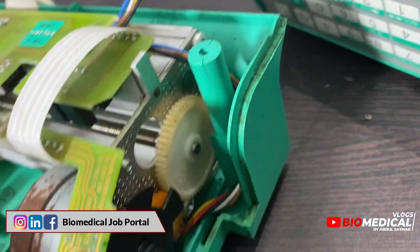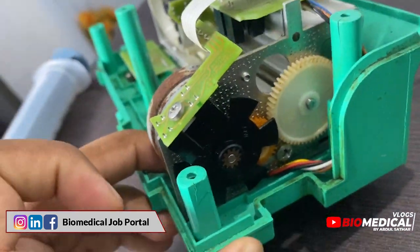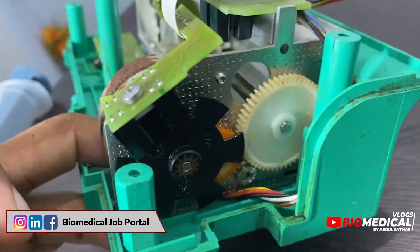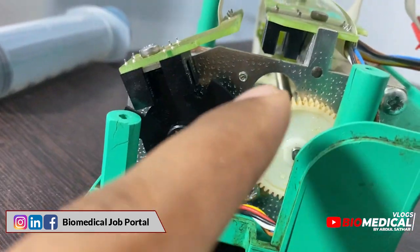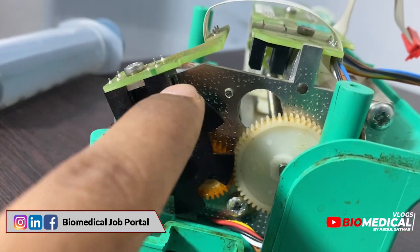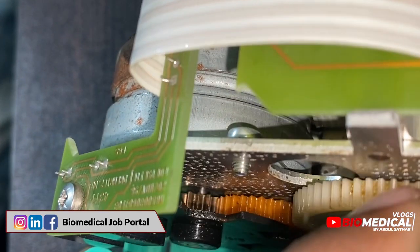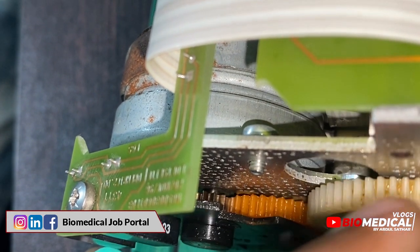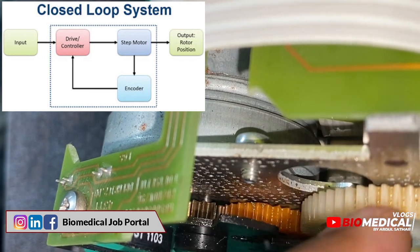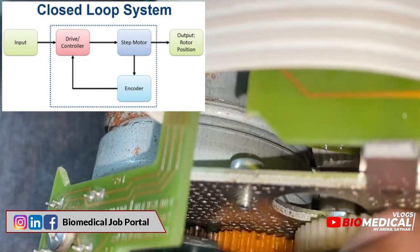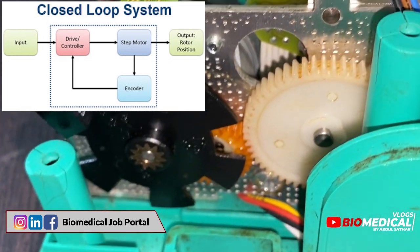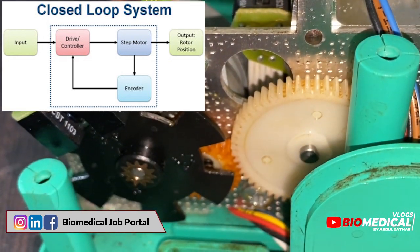Here you can see the optical encoder — we have two sensors here. By adding an encoder to a stepper motor, the controller can monitor the motor's actual position. This is very important in a syringe pump as the movement has to be controlled very precisely.